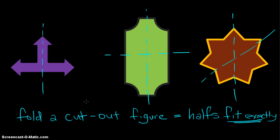So just a quick recap: what is a line of symmetry? A line of symmetry is an axis. And for a figure to be symmetrical, when you fold it, it fits exactly.